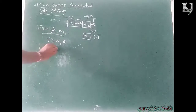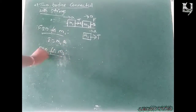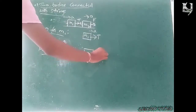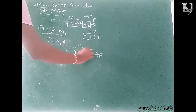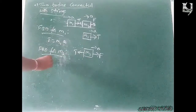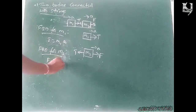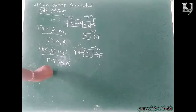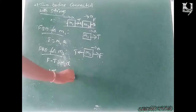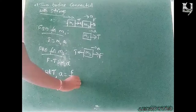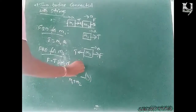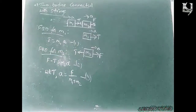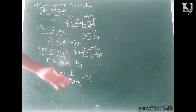Free body diagram for M2: it is the applied force and it is the tension force acting on M2. The acceleration is in the direction of the applied force, so applied force is greater than tension force: F minus T is equal to M2·A. Since we already know that A equals F by M1 plus M2.